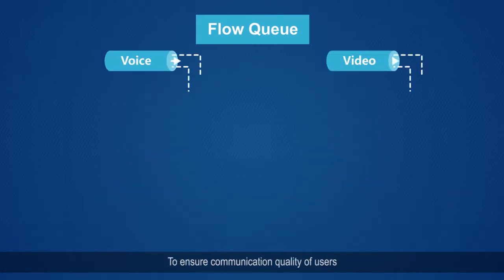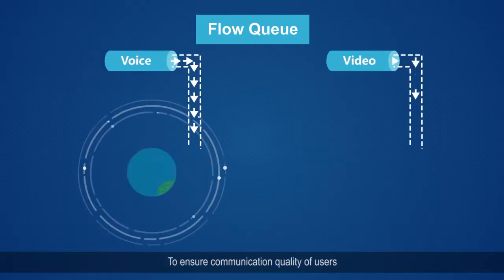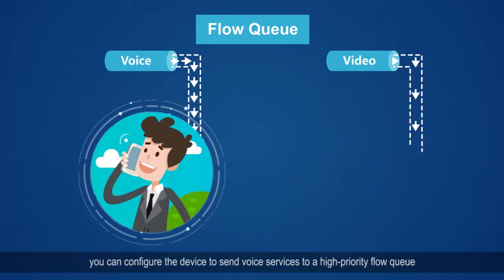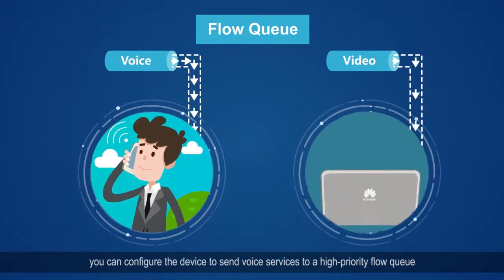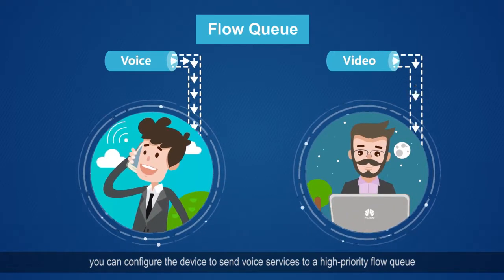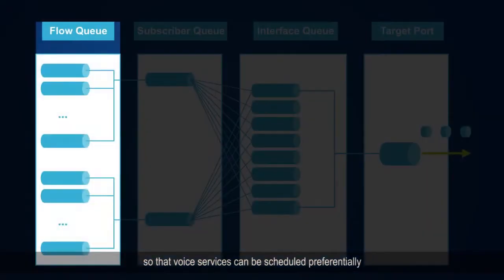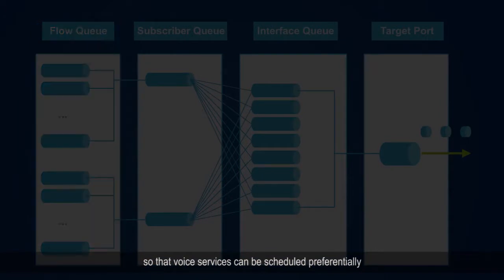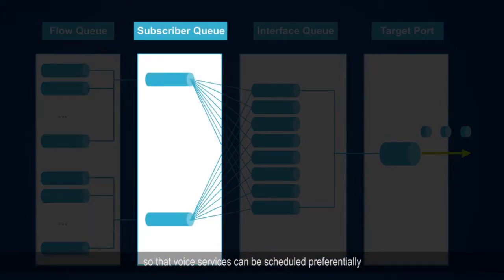To ensure communication quality of users, you can configure the device to send voice services to a high-priority flow queue so that voice services can be scheduled preferentially.